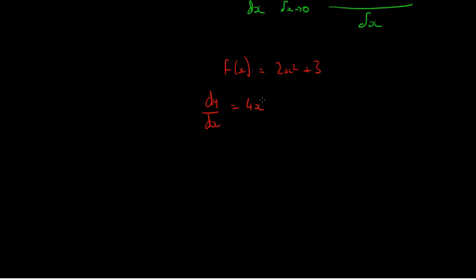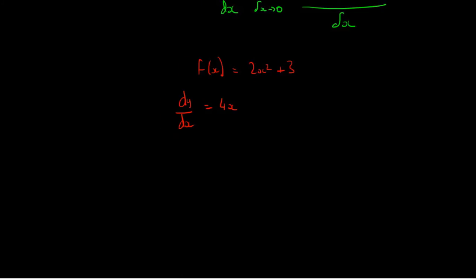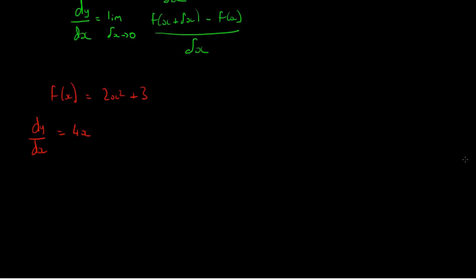which is 4x to the 1, but we don't write that, and the 3 disappears, so it just becomes 4x. But what happens if we wanted to do this from first principles?